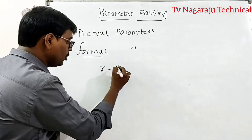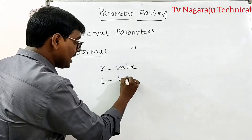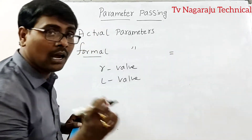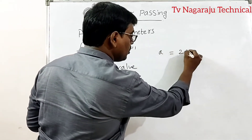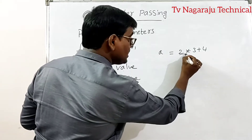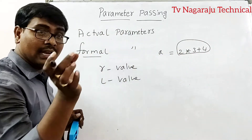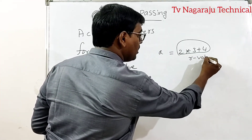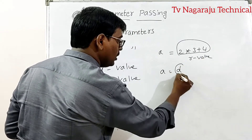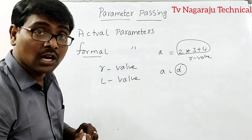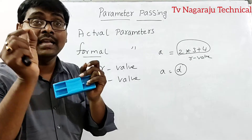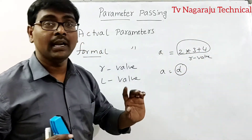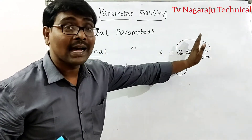Along with that, you need to know two variables: R-value and L-value. Consider an assignment operator. For example, a = 2 * 3 + 4. This is an expression that evaluates to a single value — that is called R-value. Or suppose a = d — that is also an R-value. R-value means a single value that always appears on the right side of the assignment operator.